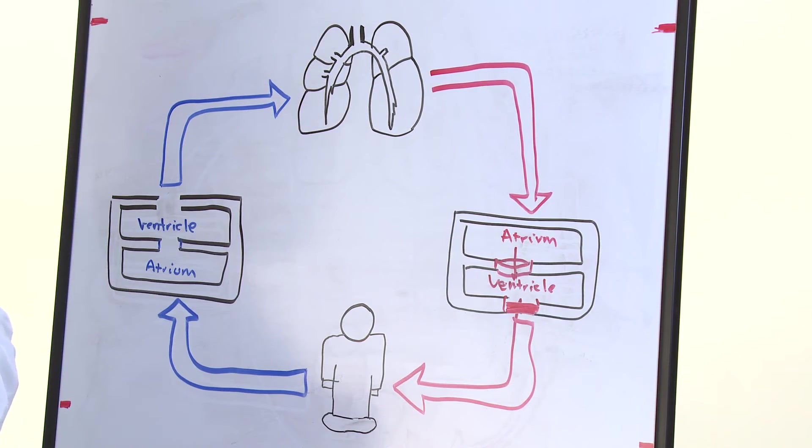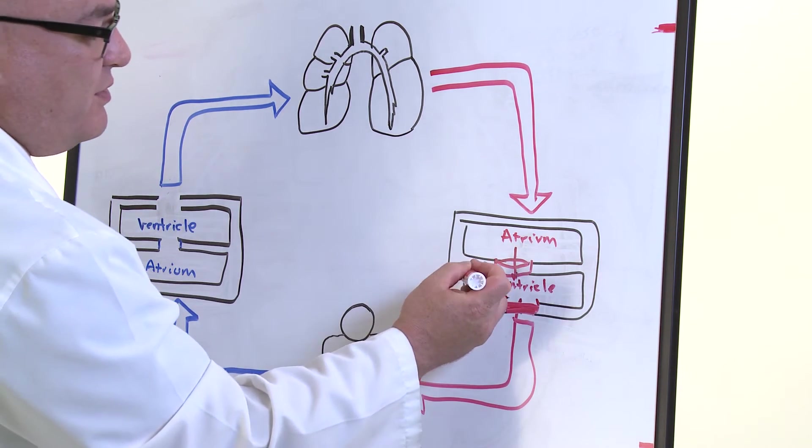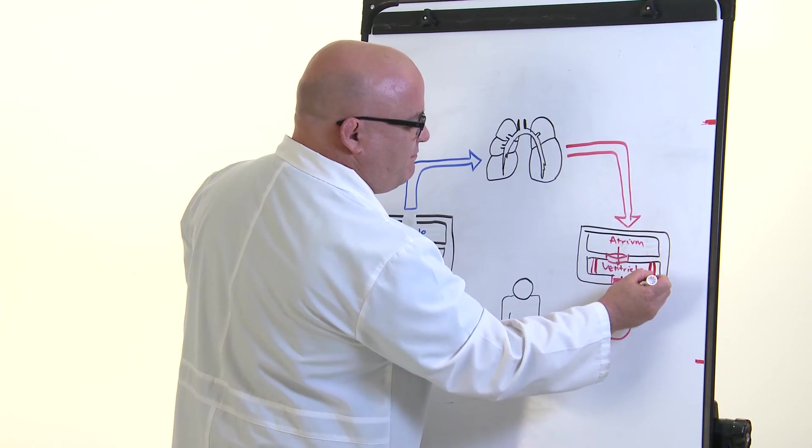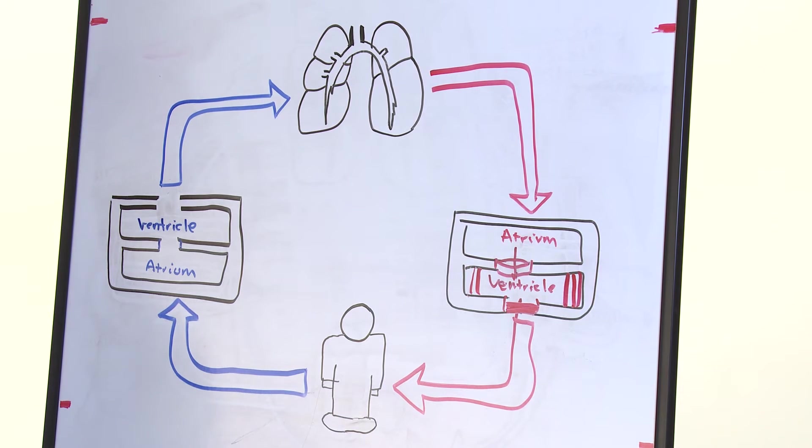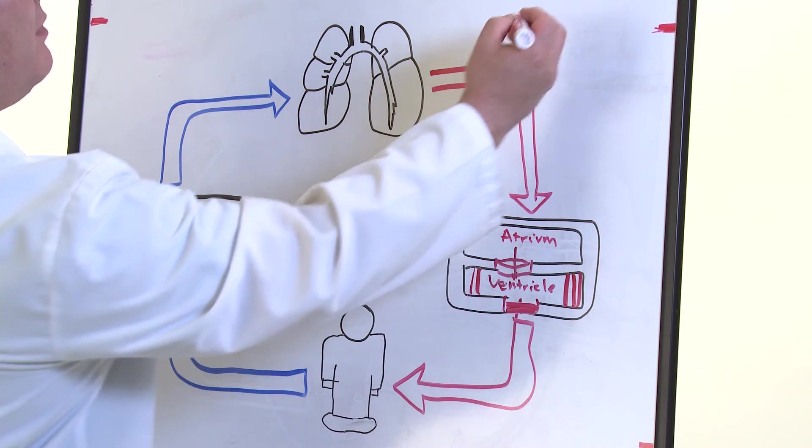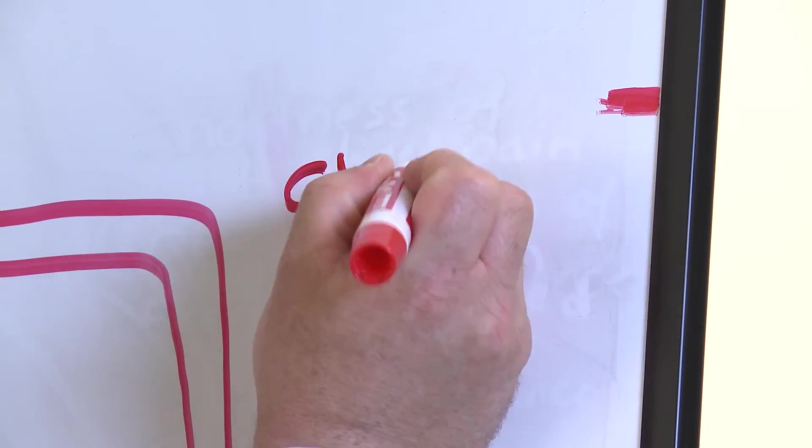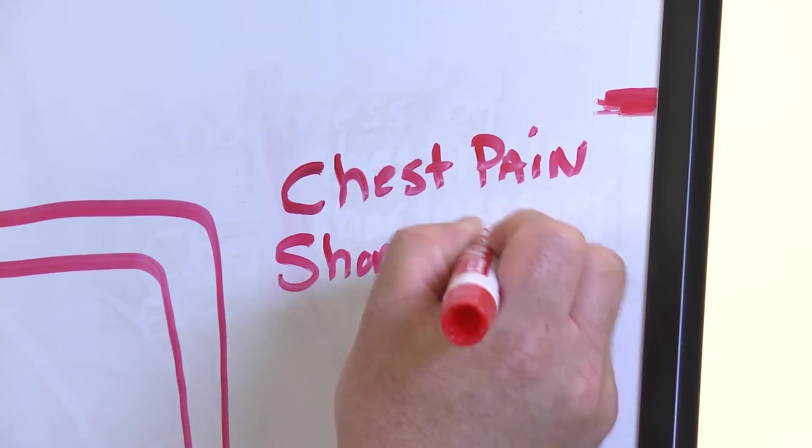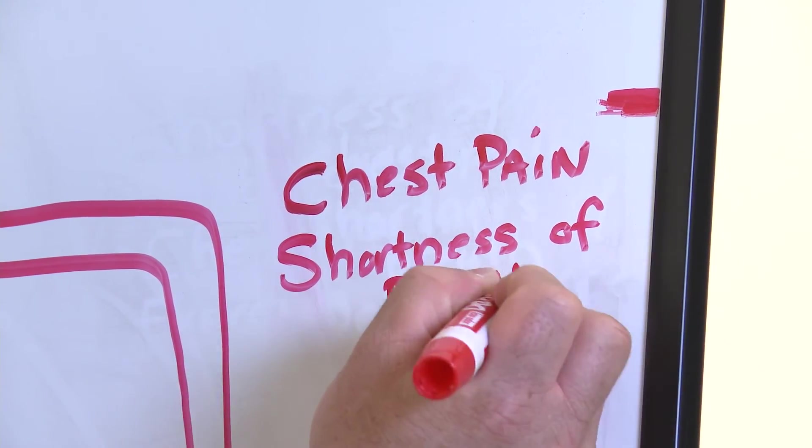In one process, the aortic valve becomes very tight. This causes your heart to work exceedingly hard, and this causes the heart muscle to thicken significantly. Eventually, patients begin to feel chest pain, shortness of breath, and decreased exercise tolerance.